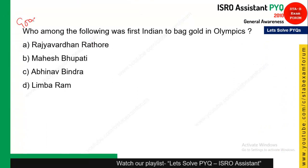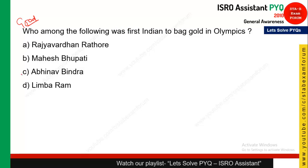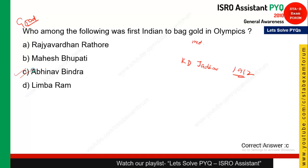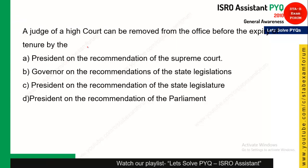A very good question: who among the following was the first Indian to bag gold in the Olympics? As you know, Abhinav Bindra in 10-meter air rifle shooting bagged the first Indian gold in the Olympics, so Abhinav Bindra is the right answer — option C. If the question were changed to who was the first Indian to bag a medal in the Olympics, then KD Jadav would be the right answer. KD Jadav won around 1952.